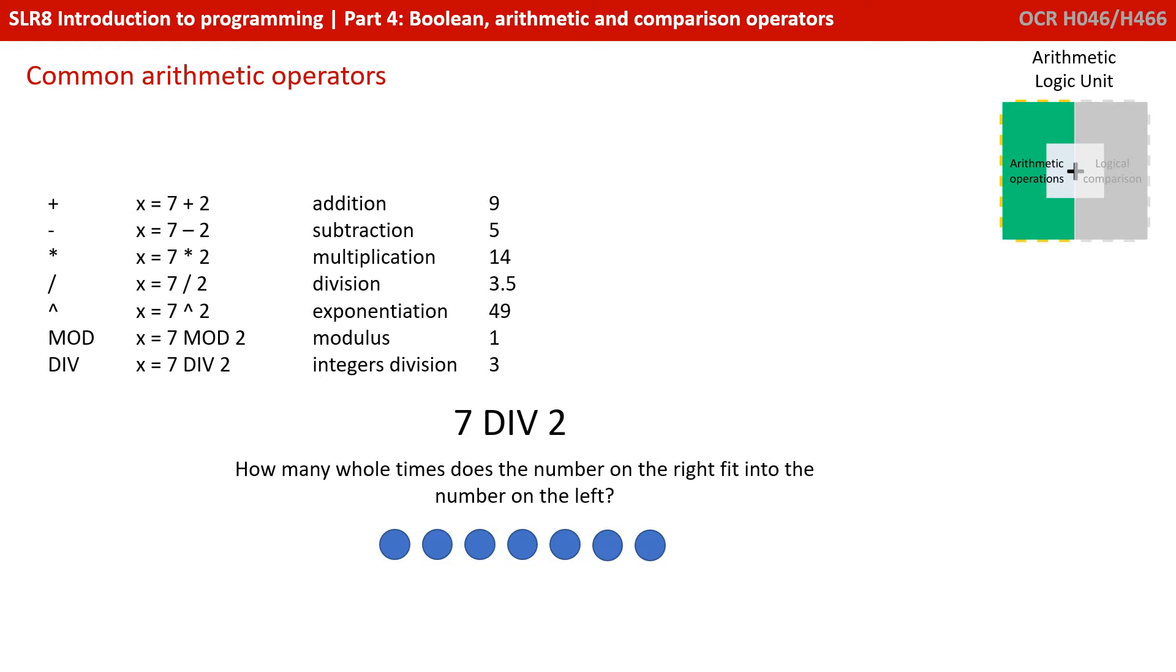In conjunction with modulus is what's called integer division. In your exam, you'll see it as the DIV command, although it's shown differently in other languages. This is how many whole times does the number on the right fit into the number on the left. As we can see from the previous example, 2 fits three whole times into 7. So 7 DIV 2 is 3. That's important—integer division is very different from normal division. With normal division, 7 divided by 2 is 3.5. With integer division, using whole numbers, 7 DIV 2 is 3.